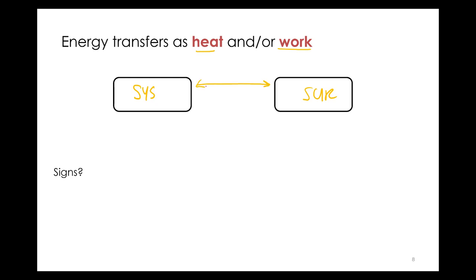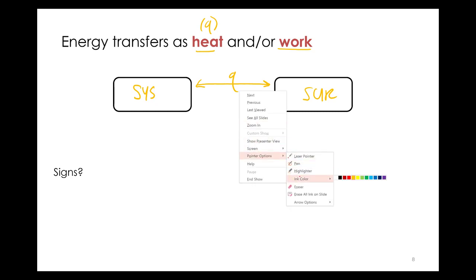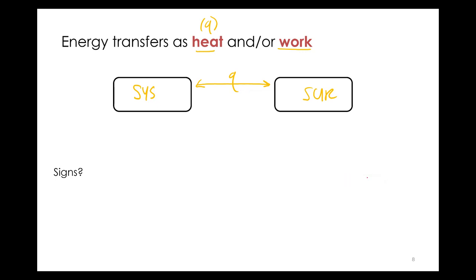We can transfer energy from the system to the surroundings via heat, which we abbreviate as Q — lowercase Q. We can also transfer energy as work, and we abbreviate work as W. What should we abbreviate work? W. What should we abbreviate heat? Q.